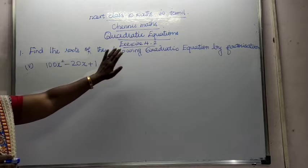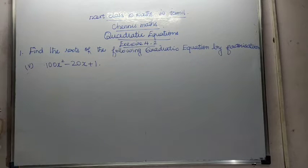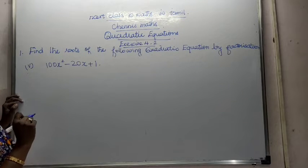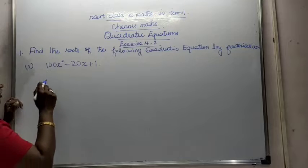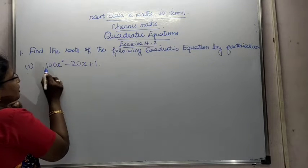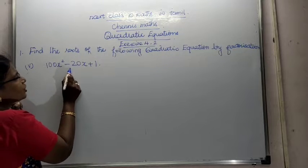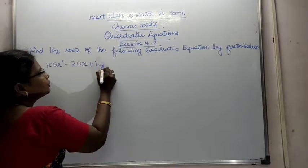Listen dears, find the roots of the following quadratic equation by factorization. The final sum of the first subdivision, first question. See here, fifth subdivision, 100x squared minus 20x plus 1 is equal to 0.